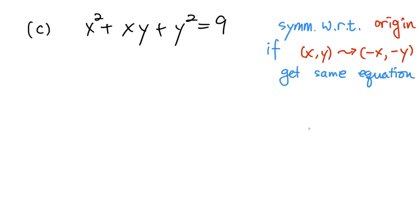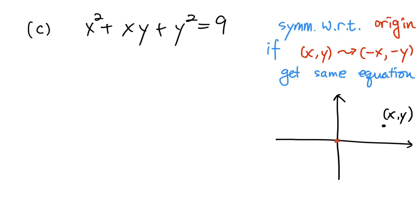Now let's talk about symmetry with respect to the origin. Here is the coordinate plane. Suppose we have a point (x, y) and the origin. If we send this point over to the other side across the origin, the x coordinate of the new point is on the opposite side — so it's negative x. And the y coordinate is also on the opposite side — so it's negative y. That new point is at negative x comma negative y, and this is the symmetry across the origin.